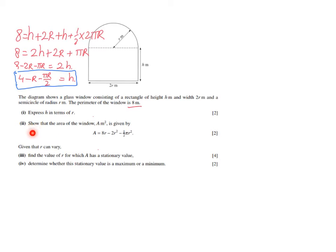The next part asks us to show that the area of the window A (in square metres) is given by a particular formula. For a 'show that' question, the given formula is the answer key — I cannot use it in my workings. I must derive it independently and demonstrate it matches.